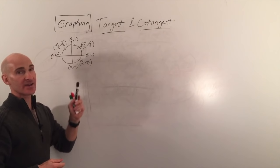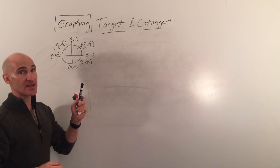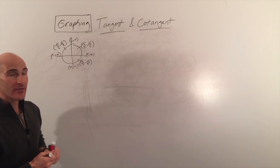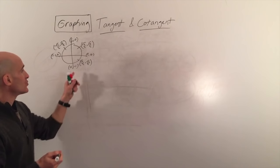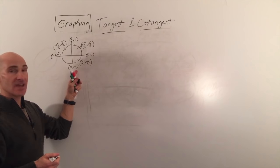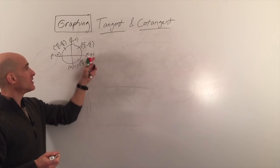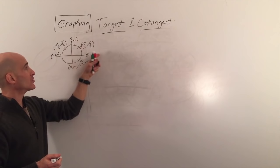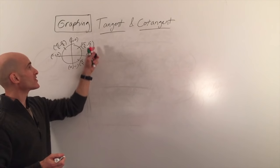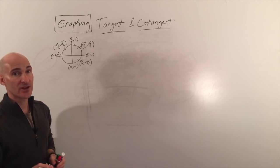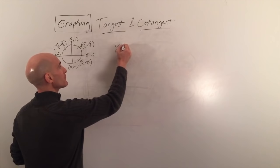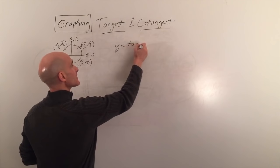On the unit circle, tangent is y over x and cotangent is x over y. To graph tangent, we look at points from negative pi over 2 to positive pi over 2 — negative angles go clockwise, positive angles go counterclockwise. Let's go ahead and graph y equals tangent of x.